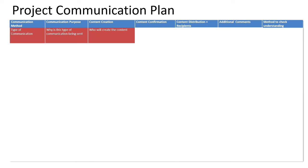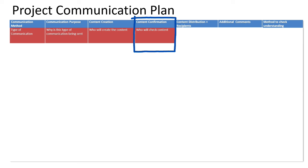You're also going to identify content creation — who's going to create the content. A lot of times communication falls on the shoulders of the project manager, but sometimes it has to be other individuals, so this is where you lay that out. Content confirmation is about who's going to check it — how do you know that the information going out is correct. For communication staying within the project team, confirmation may not matter, but if it's being disseminated externally, you want to check it against acceptability, communication standards, and company standards.